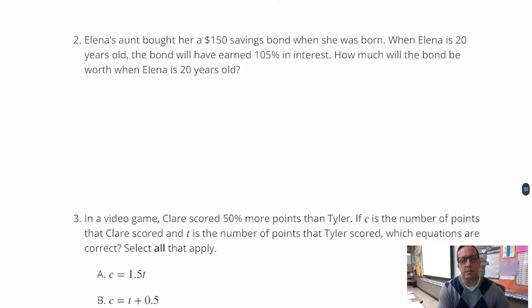For number two, Elena's aunt bought her $150 savings bond when she was born. When Elena is 20 years old, the bond will have earned 105% in interest. So how much will the bond be worth when Elena is 20 years old? So again, this is an increase, we're talking about interest. So this is an increase in percent. So you're going to do 105 plus 100, which is 205%. So we're going to find 205% times 150.